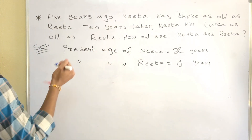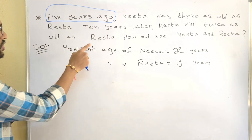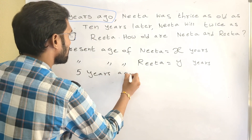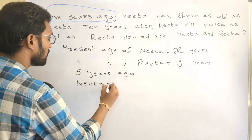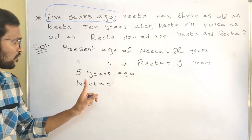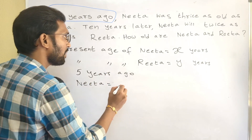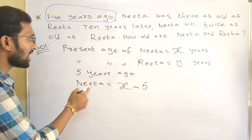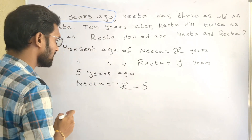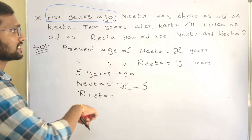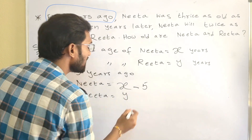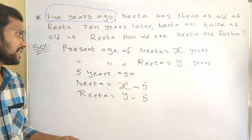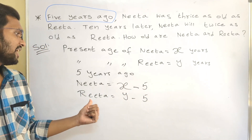Now according to the first condition — 5 years ago — let us find out their ages 5 years back. Nita's present age is X, and we are going back 5 years, so Nita's age 5 years ago is X minus 5 years. Rita's present age is Y, so her age 5 years ago will be Y minus 5 years.